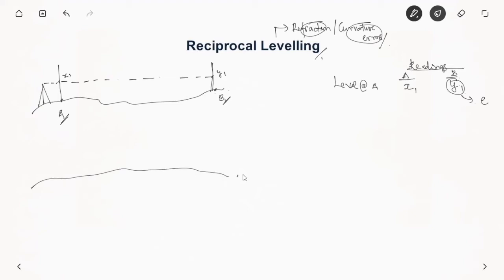Then what we do is we take the same instrument to point B quickly and then cite point A from B. So let us note down the readings as x2 at A and y2 at B. So here y2 will not have any error because it is close by. But whereas x2 will have errors because it is far away and it will have refraction or curvature errors.